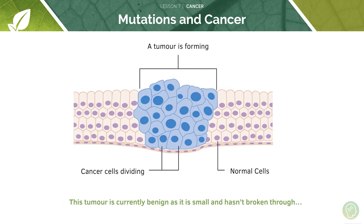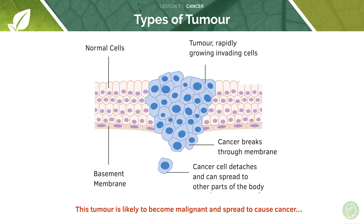Now let's contrast this with a malignant tumour. Looking at this tumour, it started off as benign — it hasn't broken through the basement membrane. But as the cancer cells keep dividing, these rapidly growing cells are going to invade through the basement membrane. The cancer breaks through this membrane and cancer cells can therefore spread to other parts of the body because they're not contained in the locality anymore. This means the tumour is likely to become malignant and spread to cause cancer.